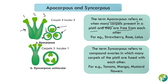Now the term syncarpous refers to compound ovaries in which the carpels are fused with each other. When we do a cross-section of this ovary we see there is only one chamber, and the carpels from all three carpels are fused together making a single chamber. So when the gynoecium consists of two or more carpels and all the carpels are fused, the ovary is said to be syncarpous.